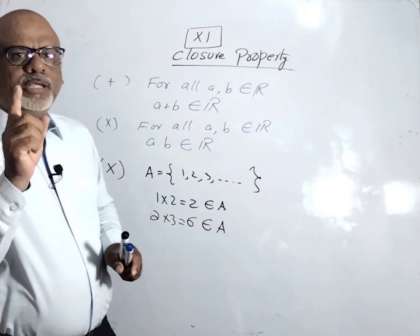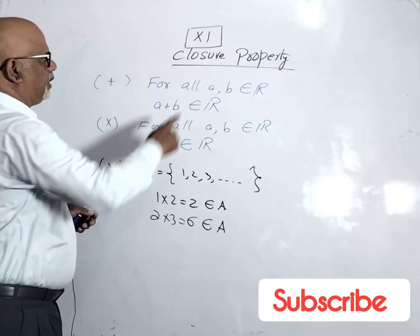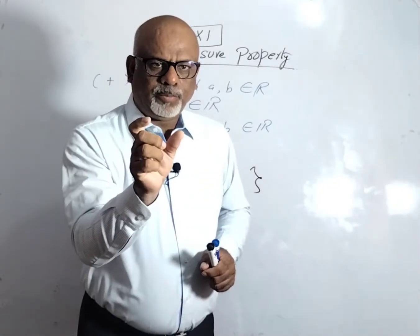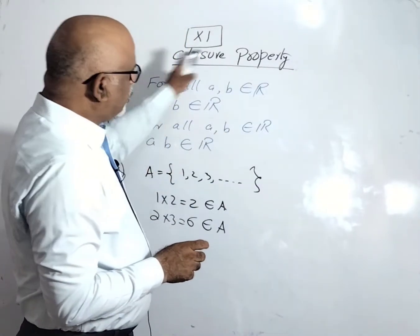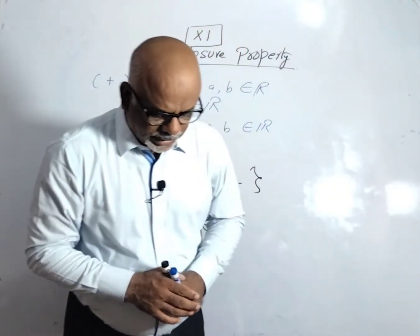So this set is closed under multiplication. If we explain the closure property in one line: under the given operation, if the result belongs to the same set, that property is called closure property.